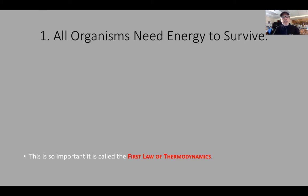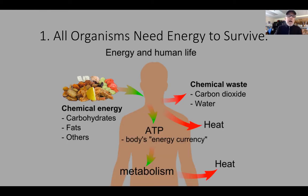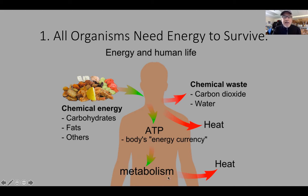As a human being, we consume food which contains energy, and we convert some of that energy into ATP — the energy currency of the cell. The energy in ATP is then used by the body to carry out the processes of life. As a result, the human body produces chemical waste: carbon dioxide and water. It also produces heat, which is waste energy that flows out into the environment and is no longer useful.